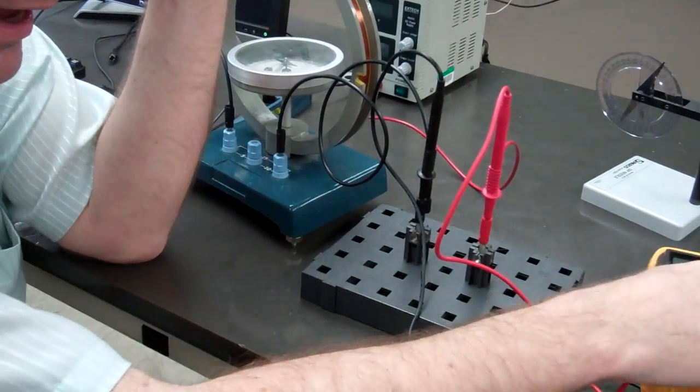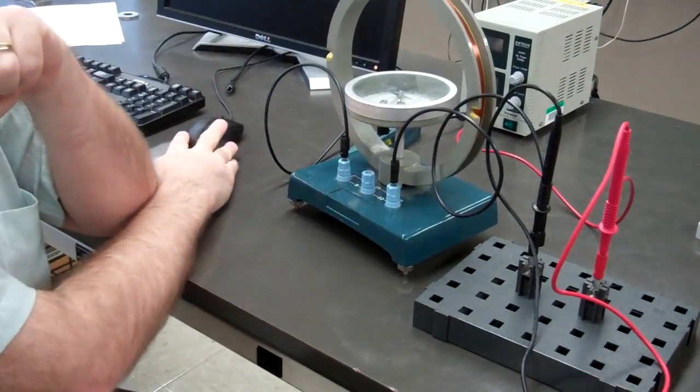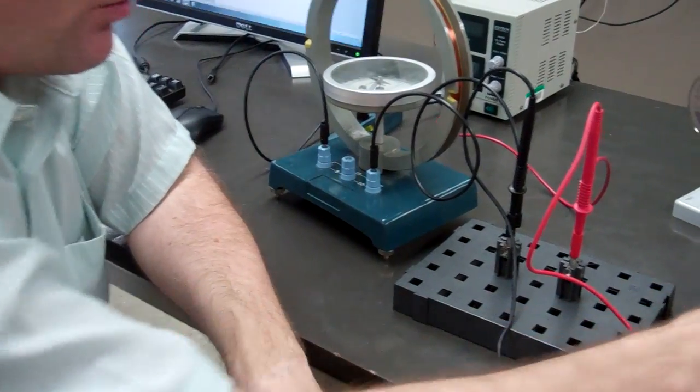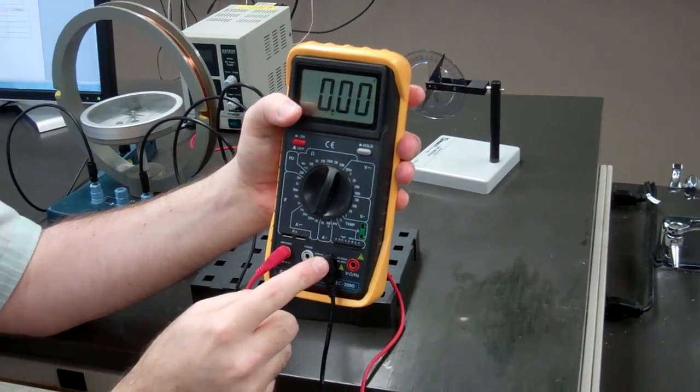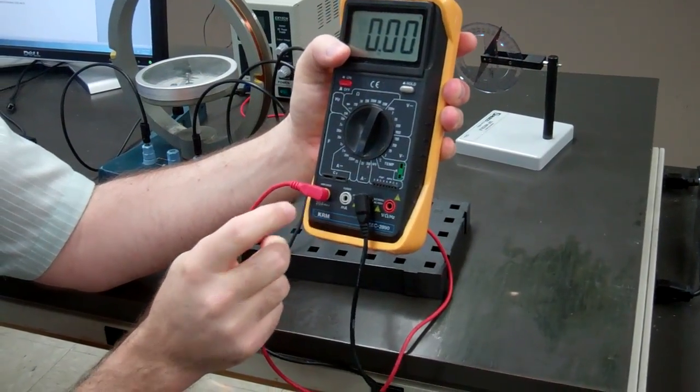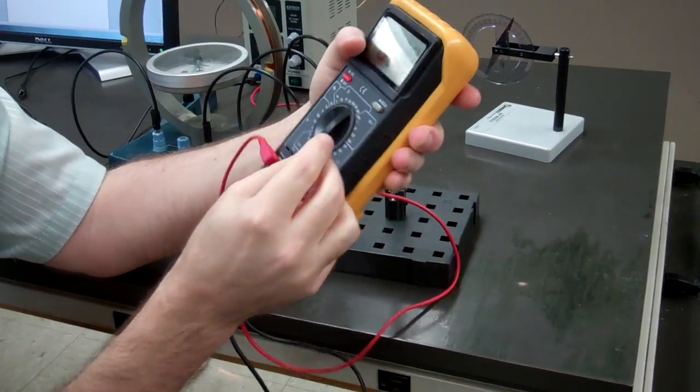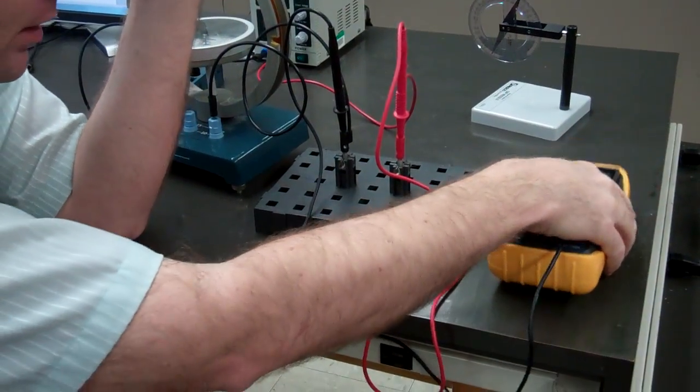We'll put the multimeter in series because we're measuring current with the circuit. The multimeter itself has black on com and red on the unfused 20 amp max input, and we've got it set to 20 amps. So we're good, we're all ready.